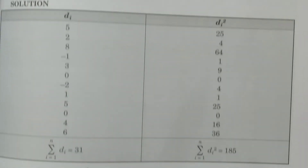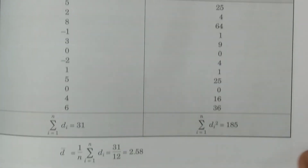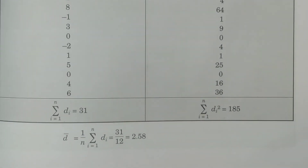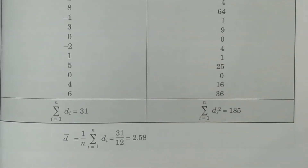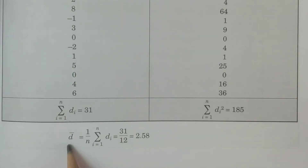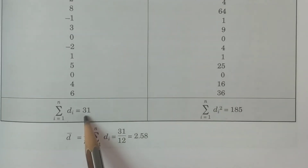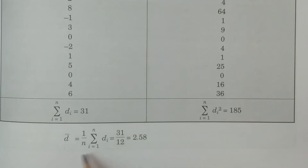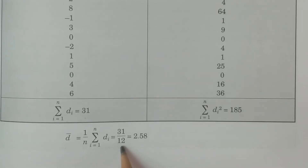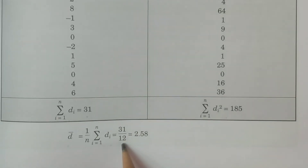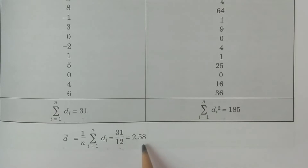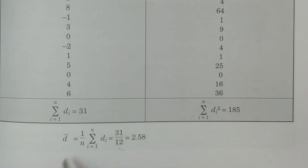Now start the calculation. First, D-bar, the average of D. The formula is D-bar equals 1 by N times summation Di. Summation Di is 31 divided by N equals 12, since there are 12 patients. So D-bar is equal to 2.58.